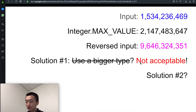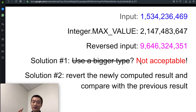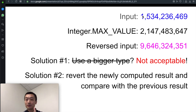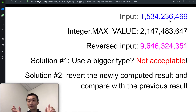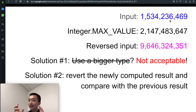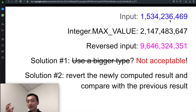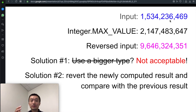Solution two is that we can revert the newly computed result. Up until the very last step, before we process the first digit, all the other nine digits get reverted. At that point, we can revert the newly computed result back and do a comparison. If these two numbers are equal, it's still behaving normally. But if at any moment they are not equal, that means an overflow or underflow has happened — because overflow gives us a very random number instead of a normally behaving one.